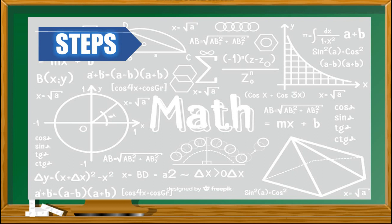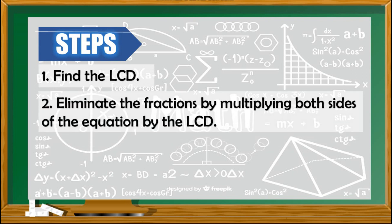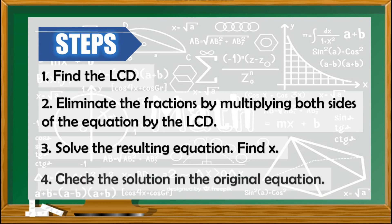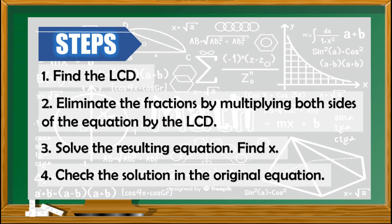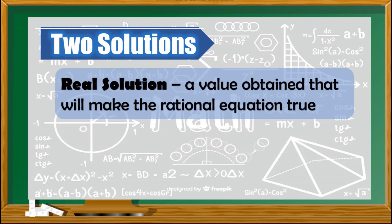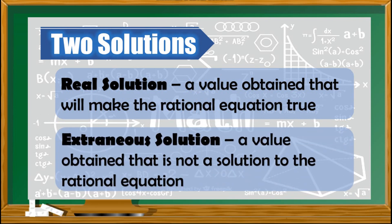So, what are the steps that you have to follow? First, you need to find the LCD or the least common denominator. Second, you have to eliminate the fractions by multiplying both sides of the equation by the LCD. Third, you have to solve for the resulting equation, finding the value of x or whatever variable is given. Fourth, check the solution in the original equation. Take note that whenever a denominator contains a variable, it is a must to check the solutions, since there are two possible solutions: a real solution and an extraneous solution. A real solution is a value obtained that will make the rational equation true. An extraneous solution is the term used if the value obtained is not a solution to the given rational equation.